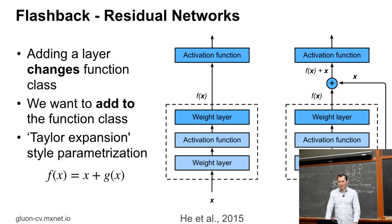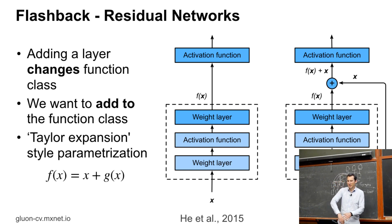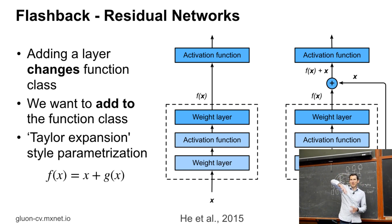The key idea from 2015 was to say: let's just short-circuit the entire nonlinearity and add the input directly to the output. That was a very simple idea because in the simplest case, the entire network just lets the input through. So the simplest function is the identity rather than the constant function zero.